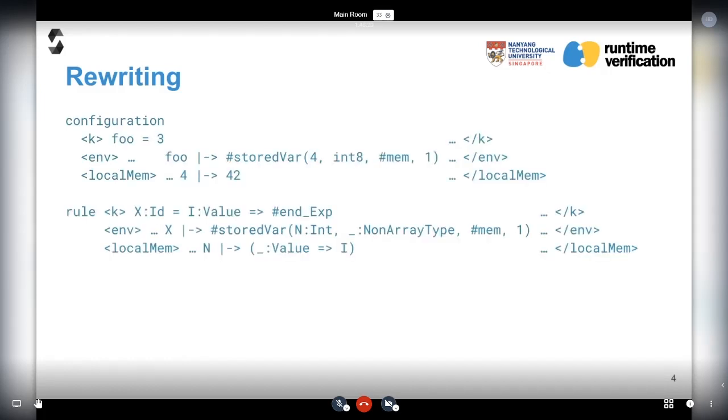Here's an example of what a rewriting rule looks like. We have a configuration with the identifier foo and you assign 3 to it. You write your semantic rules with this rule keyword. The rewriting rule just applies to any configuration that its left-hand side unifies with. The assignment in the rule matches foo equals 3.